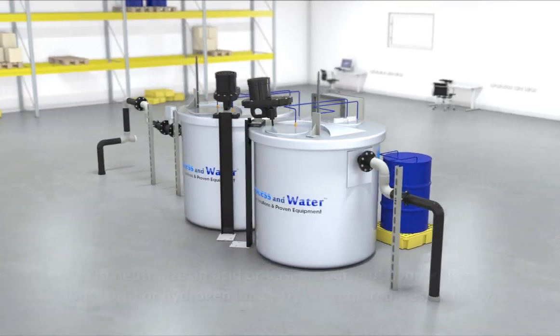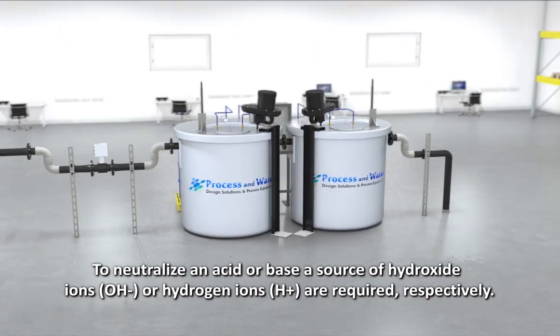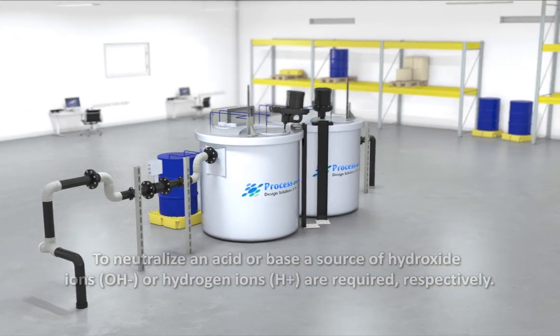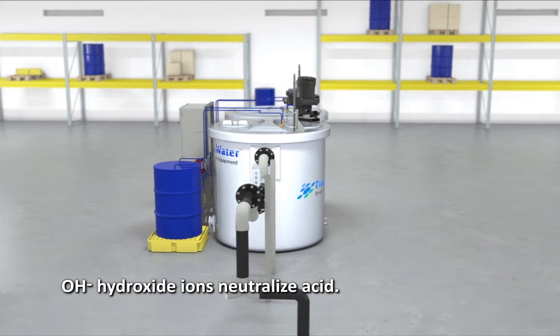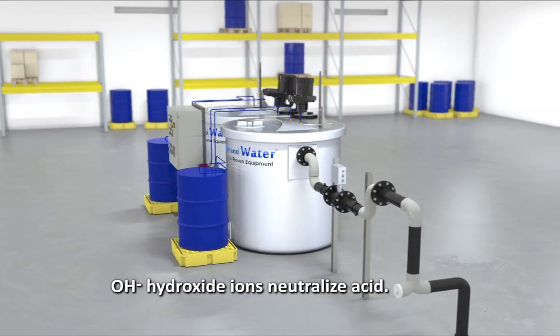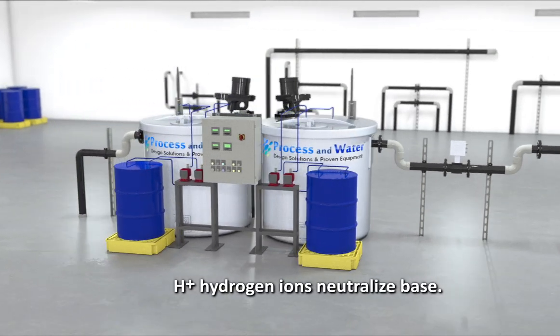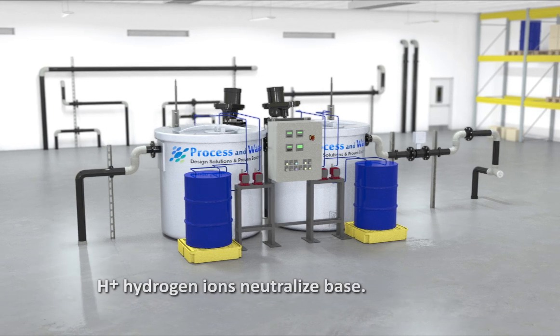To neutralize an acid or base, a source of hydroxide ions or hydrogen ions are required respectively. An acid must be neutralized with a base, which by definition is characterized by an excess of OH- ions. Likewise, a base must be neutralized with an acid, which by definition is characterized by an excess of H+ ions.